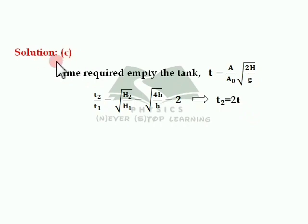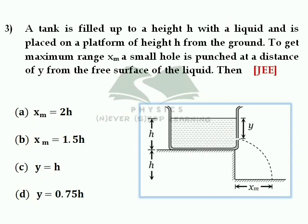The time required to empty the vessel in the second case is twice that of the first case. t2 equal to 2 times t — option C is correct. Let's move on to question number 3.